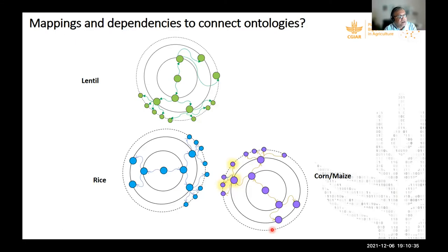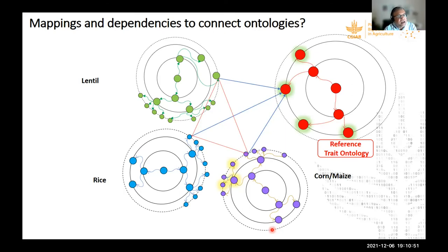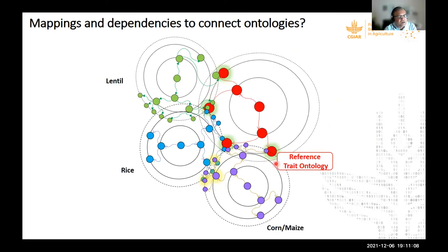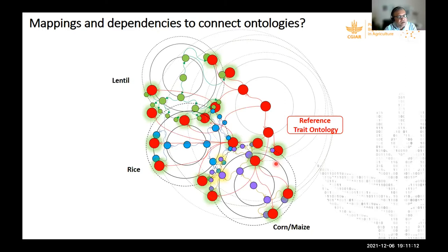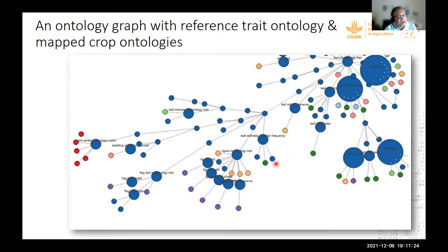This is how the mapping works. Most vocabularies are independent of each other and equivalences exist only in curators' heads, so we developed scripts to perform those mappings with reference to the trait ontology. For example, a lentil term maps to a trait ontology term, as does a corn or rice term. Through this mechanism, lentil, rice, and corn terminologies become equivalent, allowing us to integrate these ontologies into a bigger graph and enrich the reference trait ontology where terms are missing.